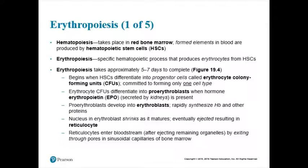The reticulocyte is basically a mature red blood cell, but it has not entered the bloodstream — it's still in the bone marrow. As soon as your reticulocyte enters the bloodstream, it's a mature red blood cell. So the progression is: hematopoietic stem cell → erythrocyte colony-forming unit → pro-erythroblast → erythroblast → reticulocyte → mature red blood cell once it enters the bloodstream.